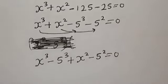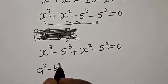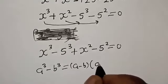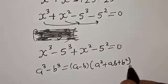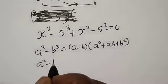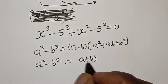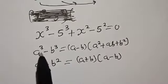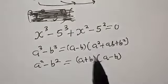Remember the identity: if you have a raised to power 3 minus b raised to power 3, that factors as (a minus b)(a² plus ab plus b²). Also, if you have a squared minus b squared, that is (a plus b)(a minus b). Here our a is s and our b is 5.